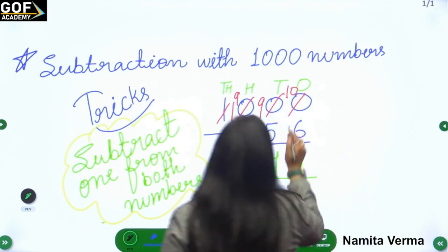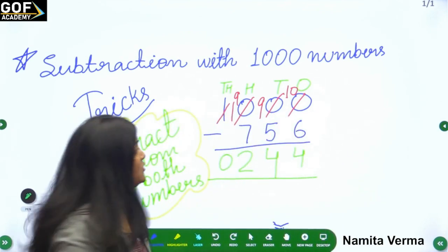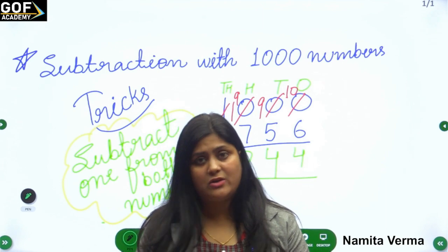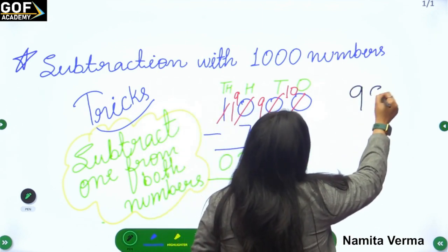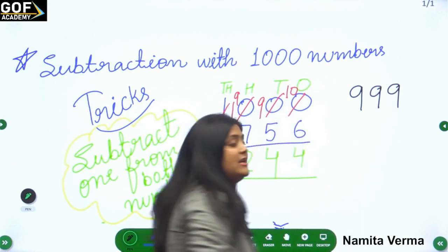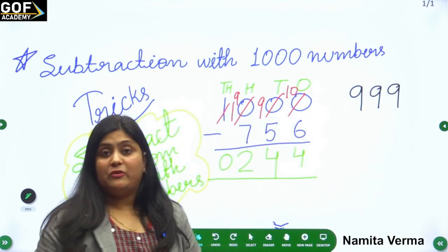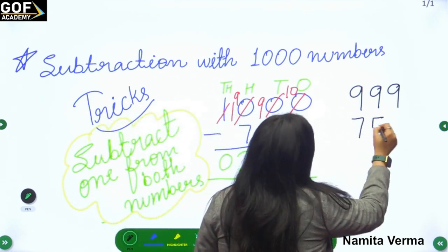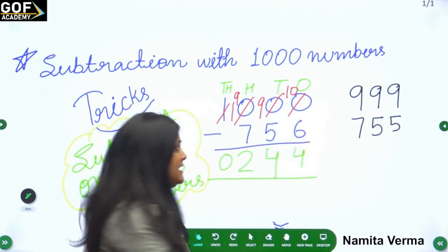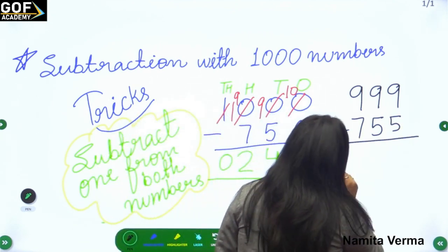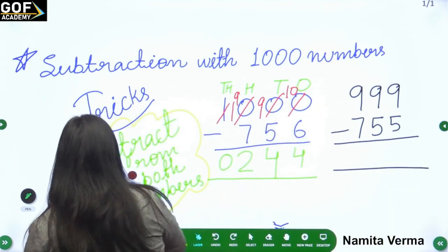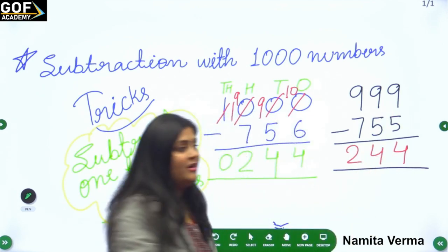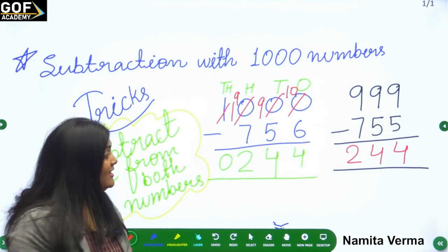If we subtract one from 1000, the number just before 1000 is nine hundred ninety-nine. And if we subtract one from 756, we get seven hundred fifty-five. Now subtract without regrouping: 9 minus 5 is 4, 9 minus 5 is 4, 9 minus 7 is 2 — we get the same answer: 244!